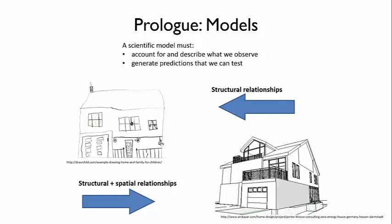For the second, you could predict what the house would look like if you stood directly in front or to the side. And these are testable predictions, which is what you need from a model.